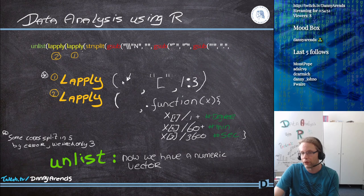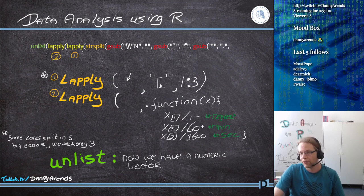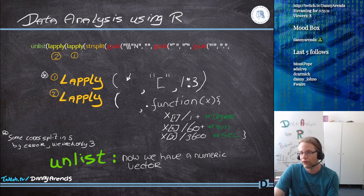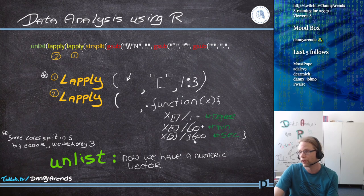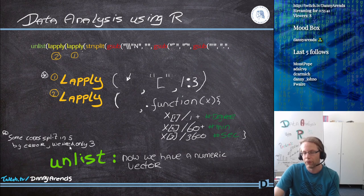After having those three elements, I do another lapply to go through each element of the list and call my conversion function: x1 divided by 1 (degrees), x2 divided by 60 (minutes), x3 divided by 3600 (seconds). Then unlist the whole thing into a numeric vector. Some code split into five by error but we only need the first three. I made a plot to verify - plotting the computed latitude and longitude and it looked pretty okay, with all the different lakes visible.